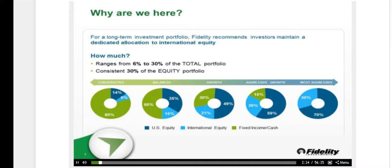The actual amount of international exposure you need is driven by the profile you choose. If you're conservative, your allocation might be around 6% international of total portfolio. If you're most aggressive, it would be up to 30%. The key number to focus on is international as a percent of your total equity — and as you'll see in these charts, the percent of equity is always a consistent 30%. So when you think about the stock part of your portfolio, having roughly 30% international and 70% domestic will allow you to take advantage of diversification benefits.